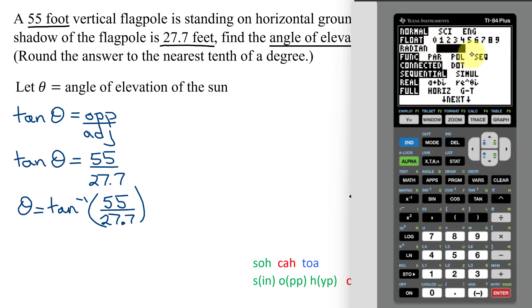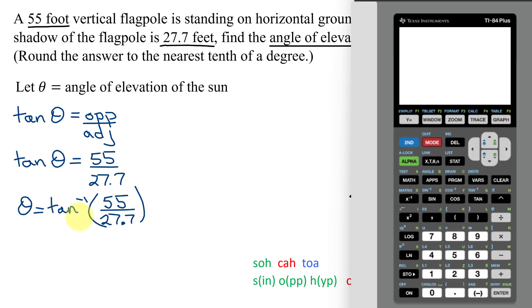Now degrees are highlighted, so I'm going to quit that. And now I need to find the inverse tangent button. That's here in blue above the tangent button. So I need to press second and then tangent. Notice it opened the parentheses. So now I need to put in my fraction 55 divided by 27.7. Close parentheses. Hit enter.